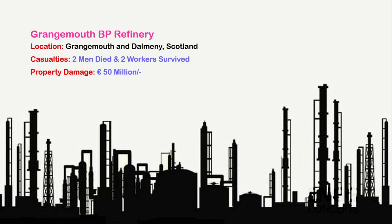Another example is the Grangemouth BP refinery fire in 1987. The incident took place due to multiple safety issues. Two workers — a fitter and a rigger — were engulfed by the flames and killed; two others managed to escape. The BP refinery fell short of expectations for the management of safety and environmental performance and was heavily fined for multiple safety and health offences. It was estimated that about 50 million euros was lost in property damage, and a further 50 million euros was lost due to business interruption.